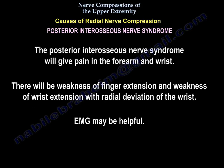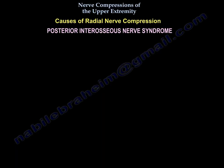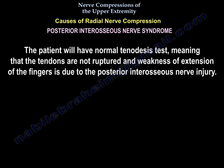Posterior interosseous nerve syndrome will give pain in the forearm and wrist. There will be weakness of finger extension and weakness of wrist extension with radial deviation of the wrist. EMG may be helpful. The patient will have a normal tenodesis test, meaning the tendons are not ruptured and the weakness of extension of the fingers is due to the posterior interosseous nerve injury.